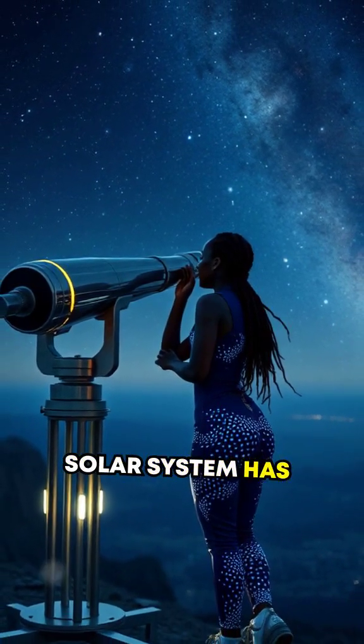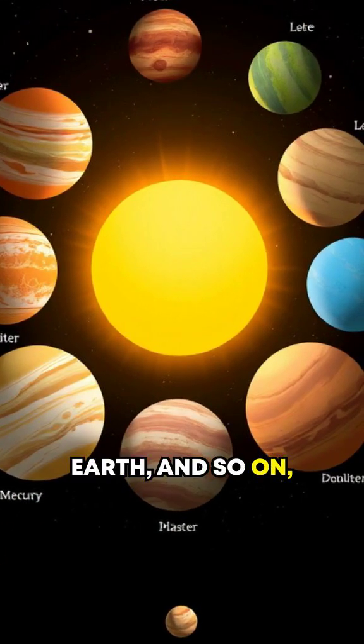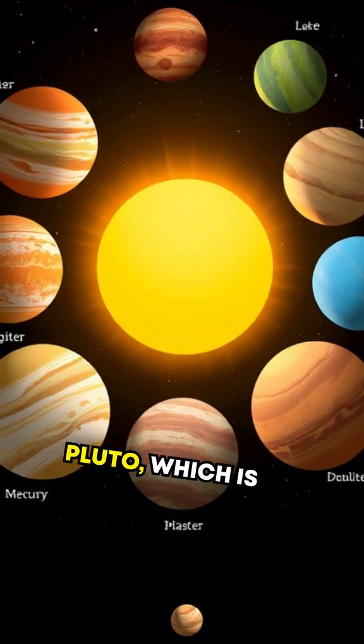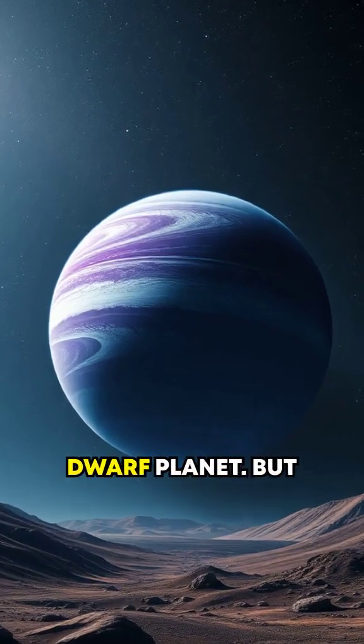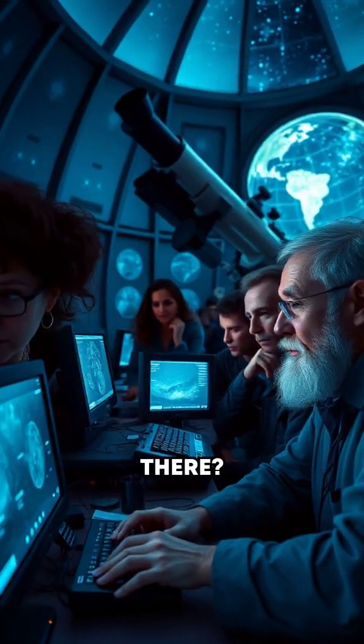Our solar system has its known planets: Mercury, Venus, Earth, and so on, right up to Neptune and Pluto, which is now considered a dwarf planet. But what if there was another, even larger planet lurking out there?